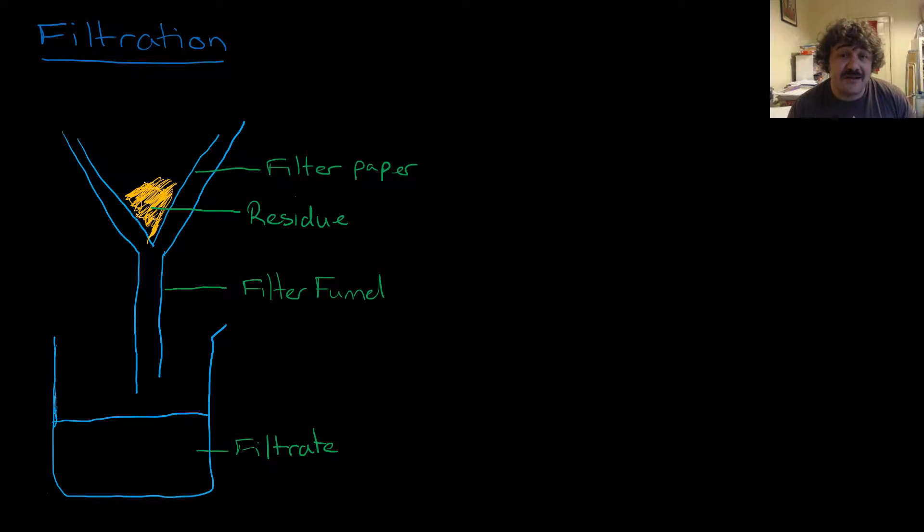Filtration. This is the most common one. This is the one that you'll have done in your classroom or you're going to do in your classroom. And it's a very simple setup. You have a filter funnel, which is usually glass. You'll have filter paper, which has tiny little holes in it, little pores, and it acts like a sieve. And what you do is you place your mixture of solid and liquid. A good example is sand and water. You put your sand and water in here.